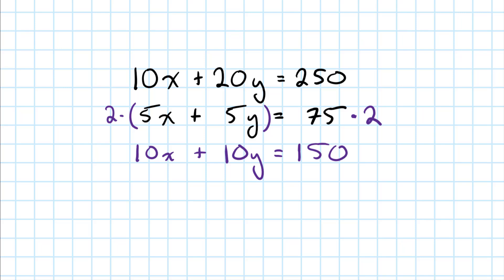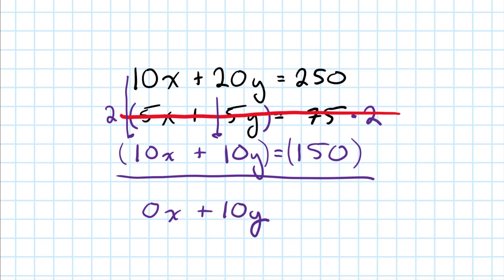Now I can get this out of the way. And I will subtract the lower equation from the upper equation. 10X minus 10X will be 0X or 0, plus 20Y minus 10Y will be 10Y. 250 minus 150, well, that's going to be 100.